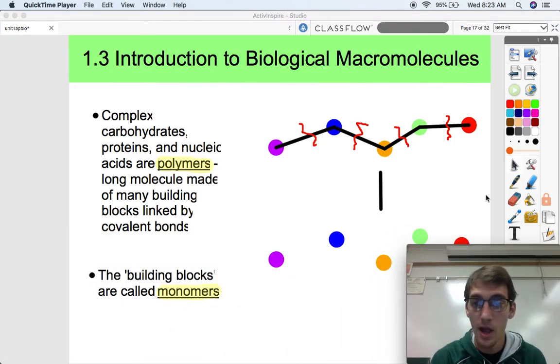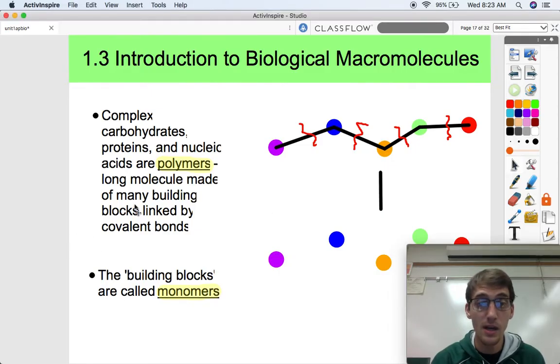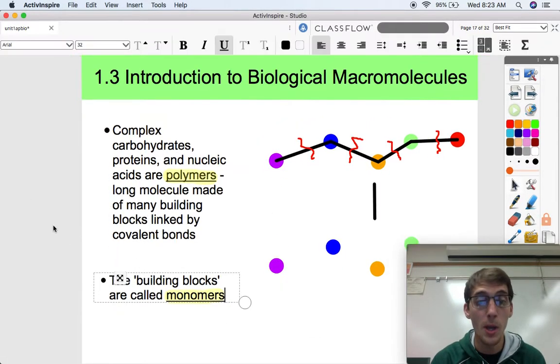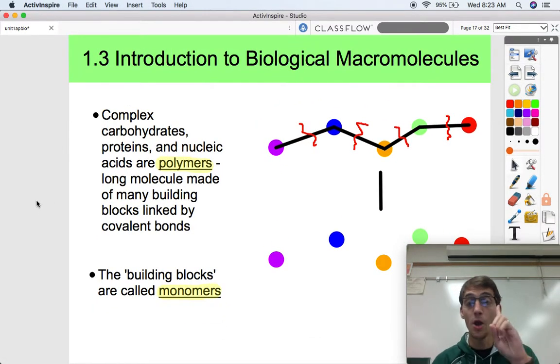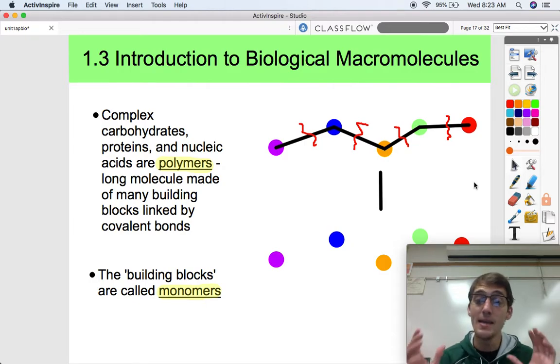So as I've already kind of alluded to here, I'm going to put my face over here, the building blocks themselves of these polymers, they are called monomers, mono meaning one. So if we were to break all of these bonds, all of these covalent bonds between these amino acids, we could get these individual building blocks that are called monomers.